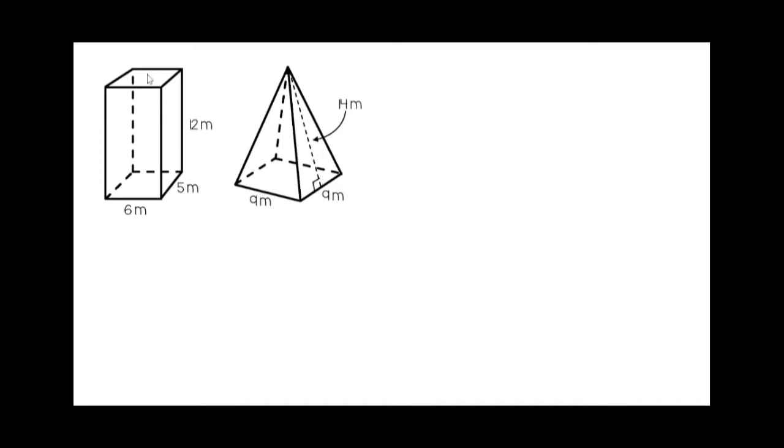A prism has two identical bases and they are separated by rectangular sides. A pyramid only has one base and because it doesn't have a second base to connect to, they connect together at a point at the top and they come together making triangular sides.